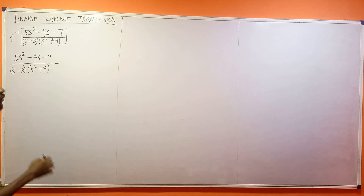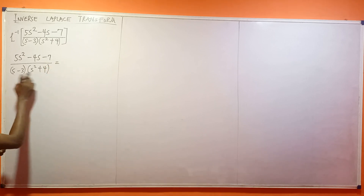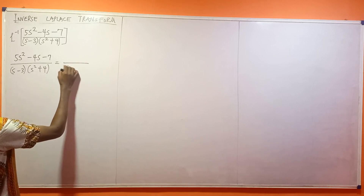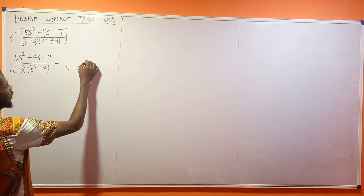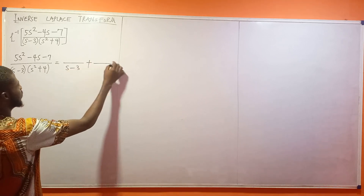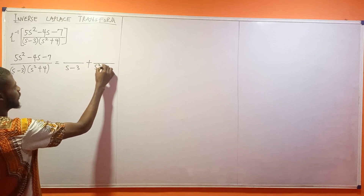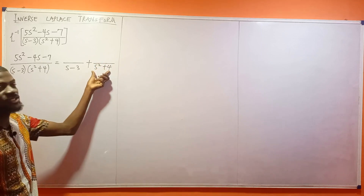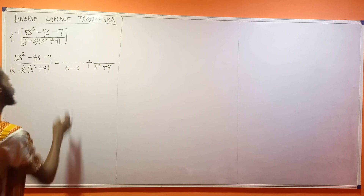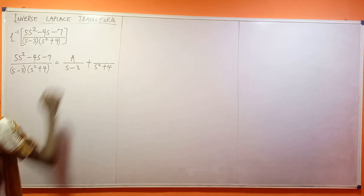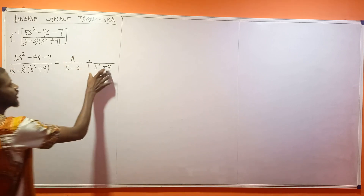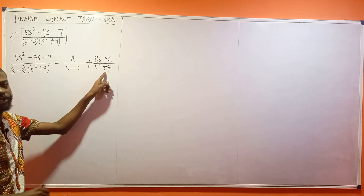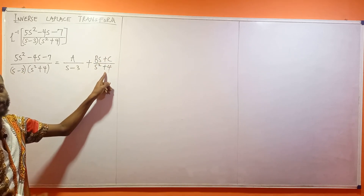So what would this be equal to? Since I have two denominators here, I'm going to have the first one over (s minus 3) plus the second one over (s² plus 4). And that's because this second factor is not factorizable. So the numerators are going to be A over (s minus 3), and Bs plus C over (s² plus 4), because the bottom is not factorizable.